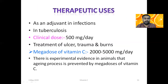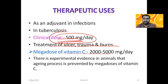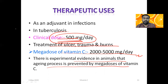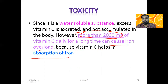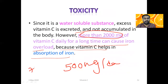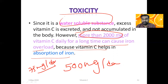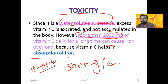The therapeutic dose of Vitamin C is about 500 mg per day, used for treatment of ulcers, trauma, and burns. Mega doses of 2000 to 5000 mg per day have experimental evidence in animals showing prevention of the aging process. Vitamin C is also helpful in tuberculosis. However, doses more than 2000 mg may lead to toxicity, including iron overload, since Vitamin C enhances iron absorption. Since it is water-soluble, toxicity chances are less but still possible at very high doses.